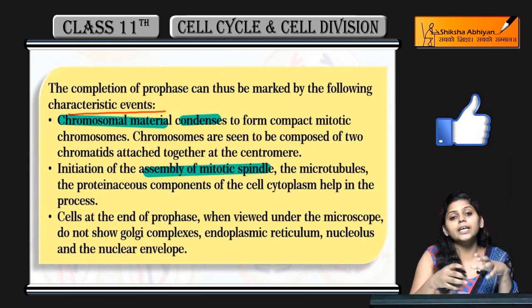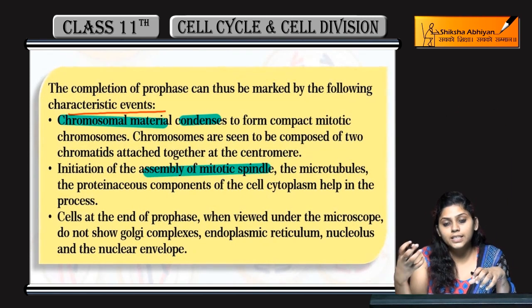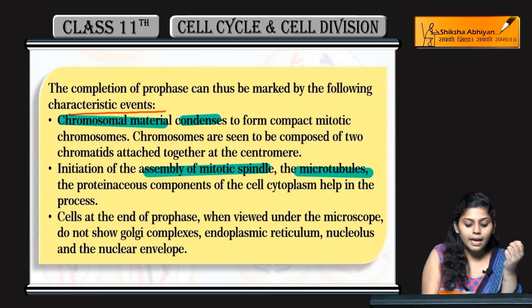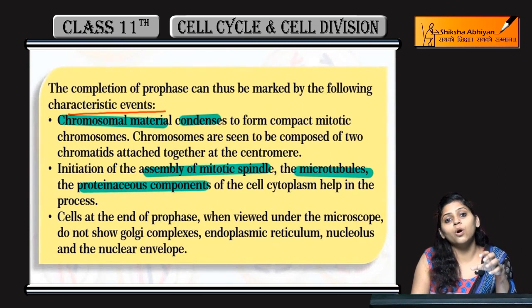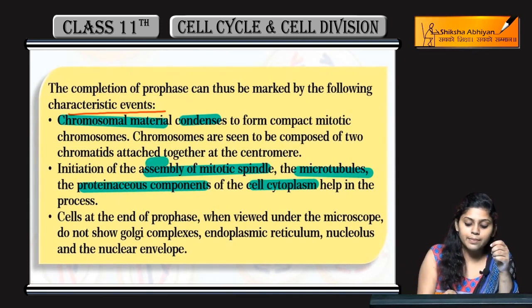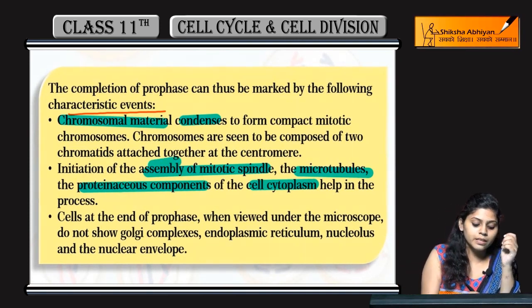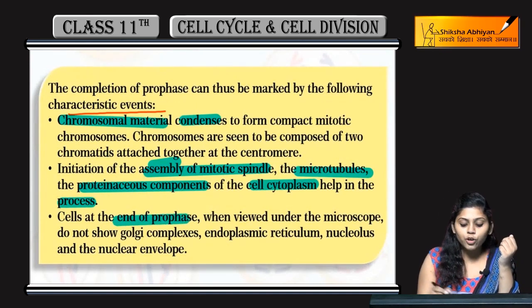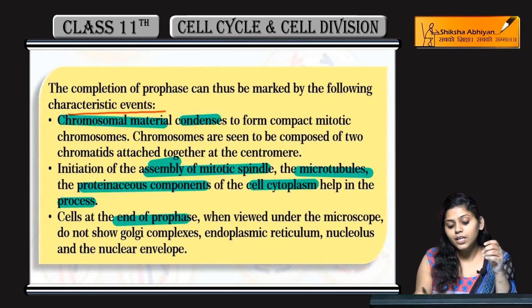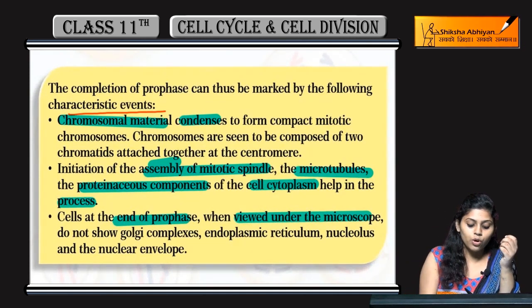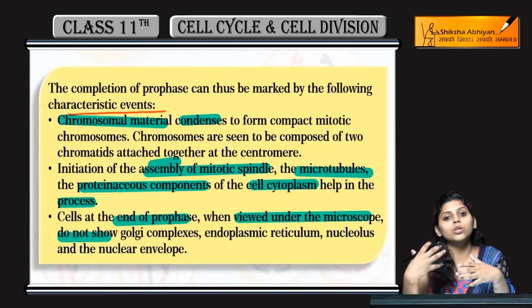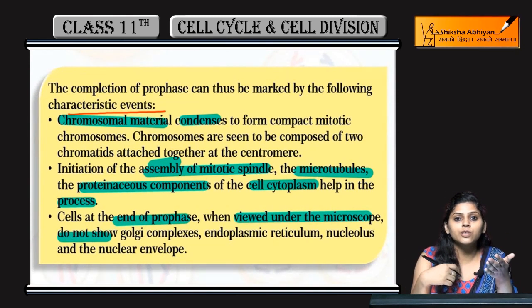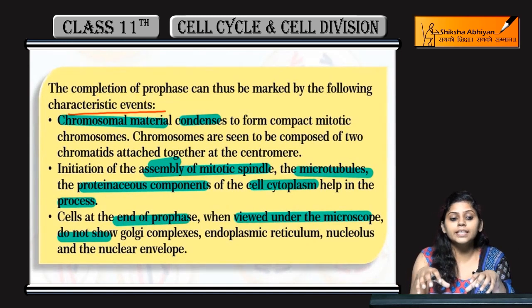Initiation hote hai assembly of mitotic spindle — microtubules and proteinaceous components of cell cytoplasm — in sab ki assembly ho rahi hai, which helps in the process of mitosis. End of pro phase me kya hota hai: agar aap microscope ke under usse dekhenge, then koi bhi organelle jo hai woh show nahi hongi, chahe woh Golgi apparatus ho, endoplasmic reticulum ho, ya nucleus ho — koi bhi aapko dikhe ga nahi.